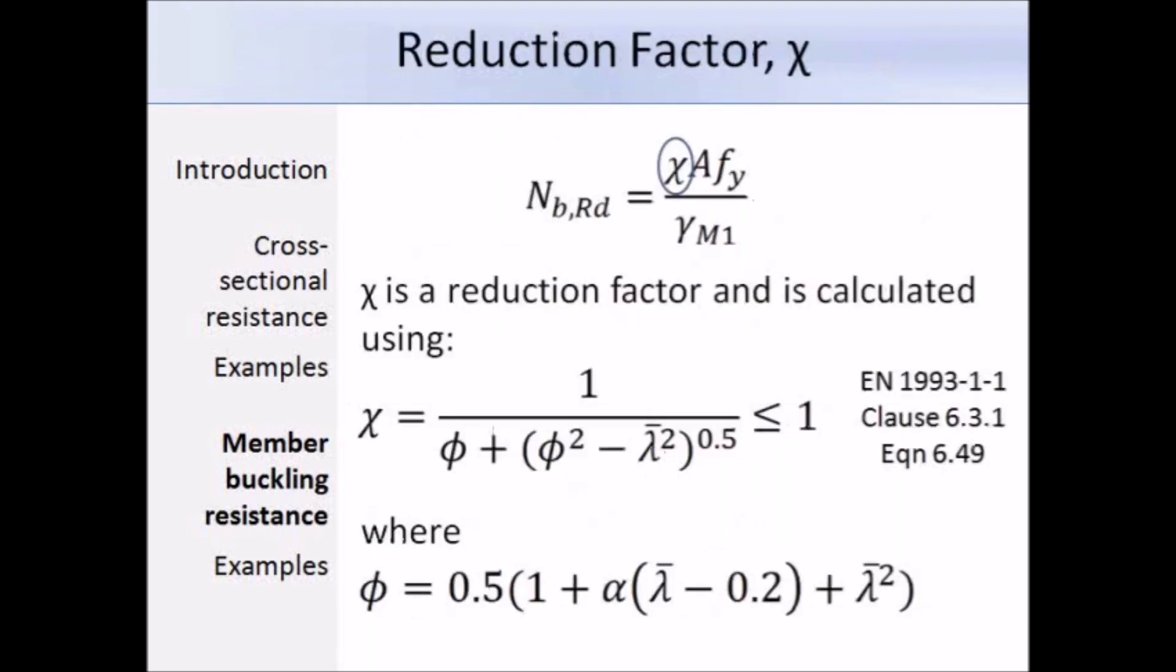To find the value of chi, we use expression 6.49 in clause 6.3.1. It tells us that chi equals 1 divided by phi plus phi squared minus lambda bar squared all to the power of 0.5, and that has to be less than or equal to 1 since chi is a reduction factor.